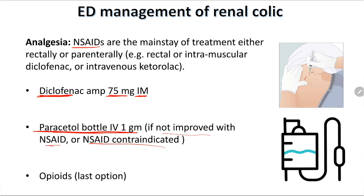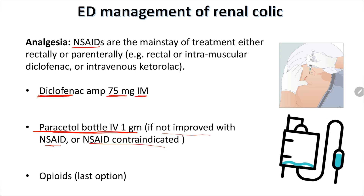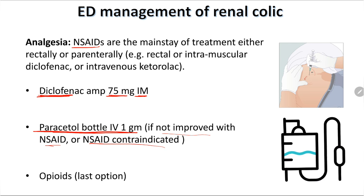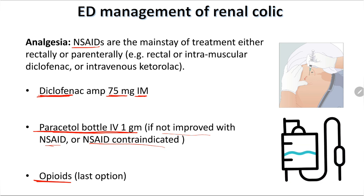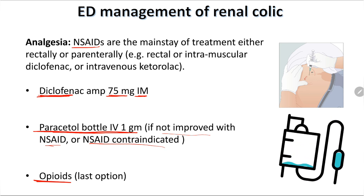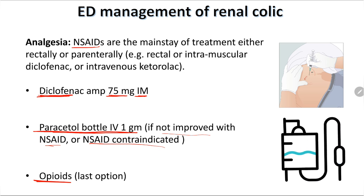If NSAIDs are contraindicated or the patient does not improve, you can use paracetamol IV 1 gram. You may use either or sometimes both if pain is very severe. Opioids such as tramadol, morphine, or pethidine can be used as a last option — please do not use opioids as the first-line pain management for renal colic.